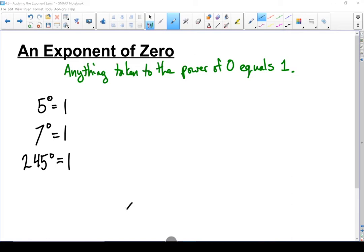It even works with variables. x to the power of 0 equals 1. 5xyz to the power of 0 equals 1. It doesn't matter what's inside the base. If the power is 0, the answer is 1.